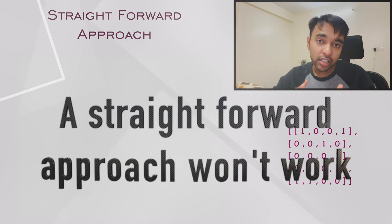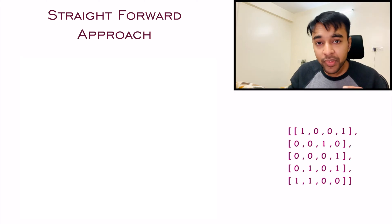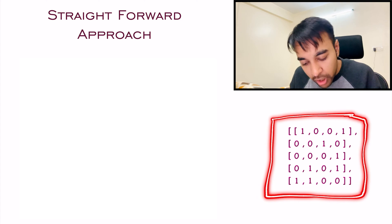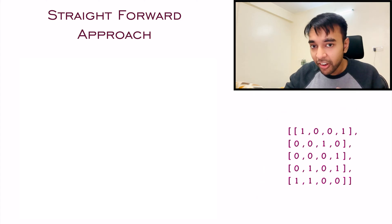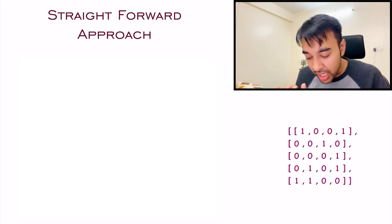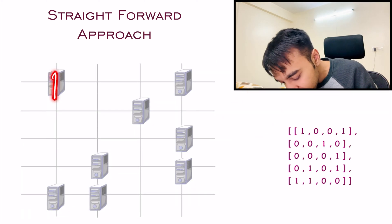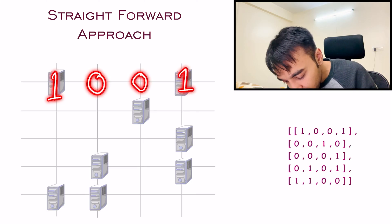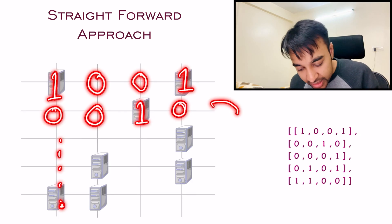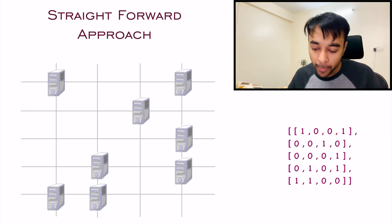Now that you have understood how to interpret the input grid and how servers are laid out in your server center, let us try to take up a bigger test case. This time I have a larger input array, and this array is defining how these servers are laid out in the grid — where the servers are present and how the connections look. If you try to lay them out, you will get a pattern like this. You can see values 1, 0, 0, 1, 0, 0, 1, 0, and so on, and these all match with my input values. This is how all the servers are laid out.